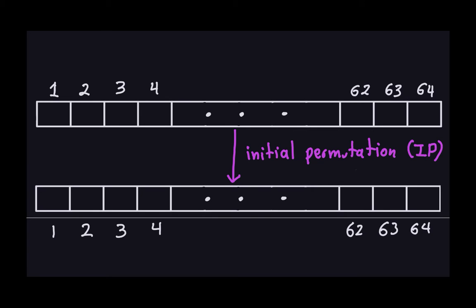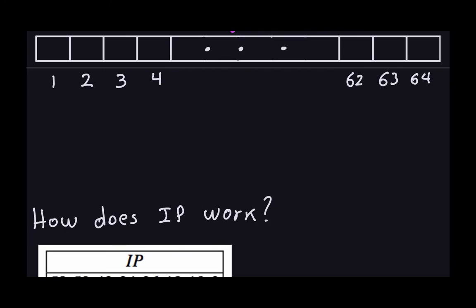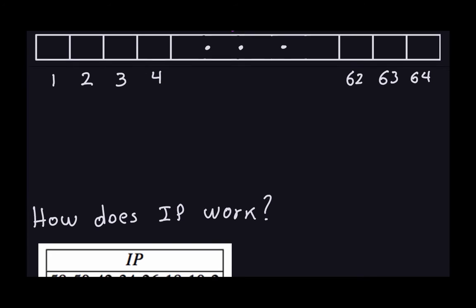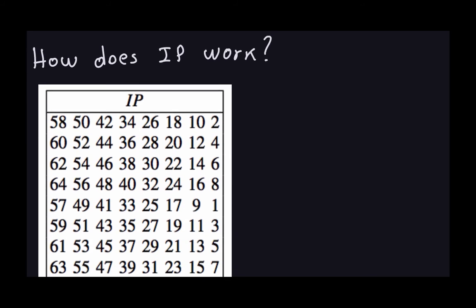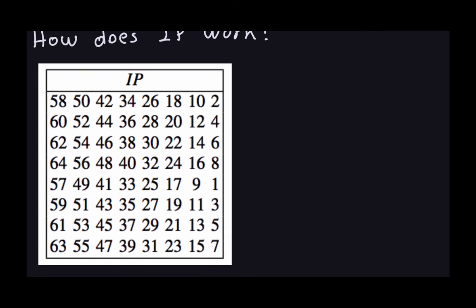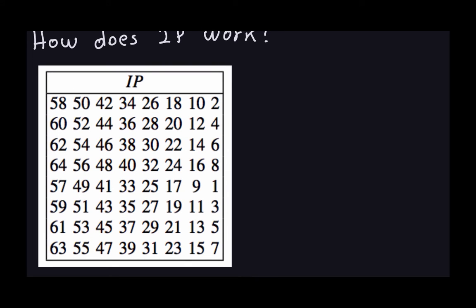There are many ways to represent the permutation. One way is by using a table that tells you how to transform the bits — specifically, where each bit from the input should be placed in the output. The table contains all numbers from 1 through 64, representing bit positions.